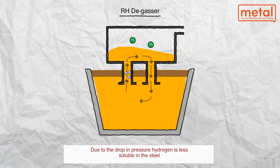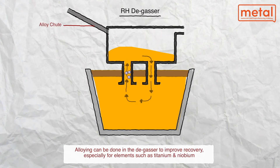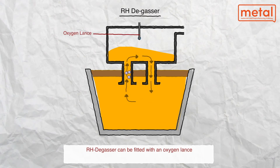The vessel is equipped with a vacuum lock through which alloys can be added without disrupting the vacuum. Alloy additions are made to enhance the steel's chemical and mechanical performance as per the customer's specification. During the degassing process, certain grades of steel can benefit from aluminium additions.